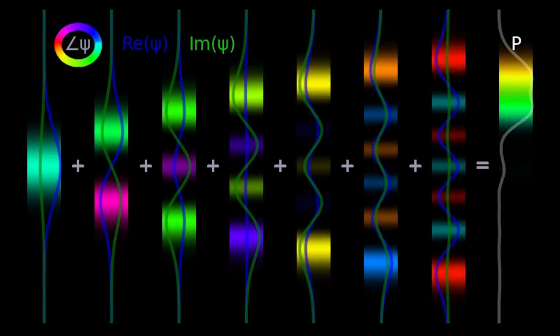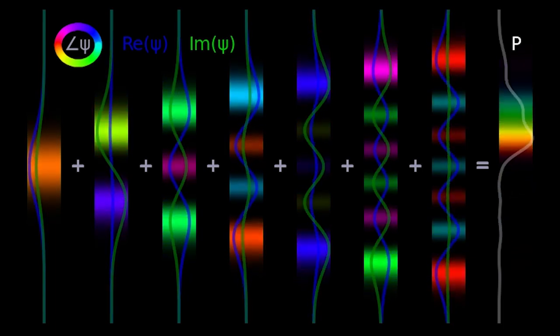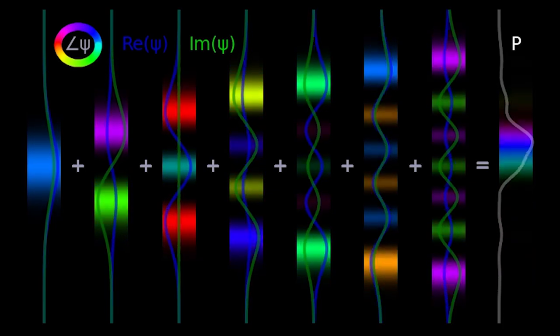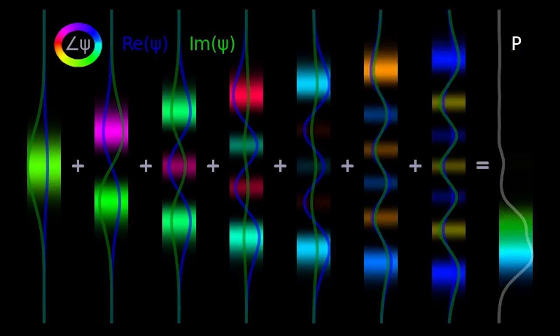Behind these curves, again, we see the phase angle represented by a color, and also the opacity represents the probability density, or the amplitude squared of the wave function. This depiction is somewhat redundant, since the blue and green curves already show the whole wave function on their own, right, they show the real part and the imaginary part, that's the only parts of a complex number, but I like seeing the colors too.